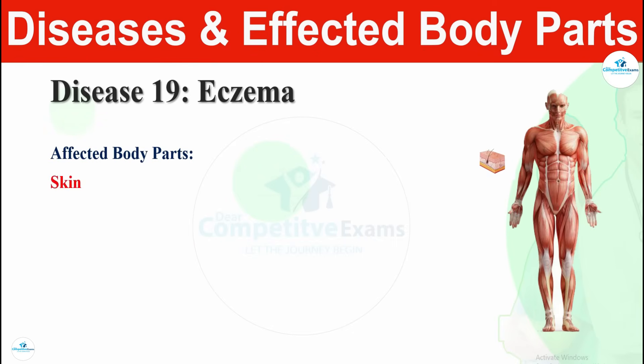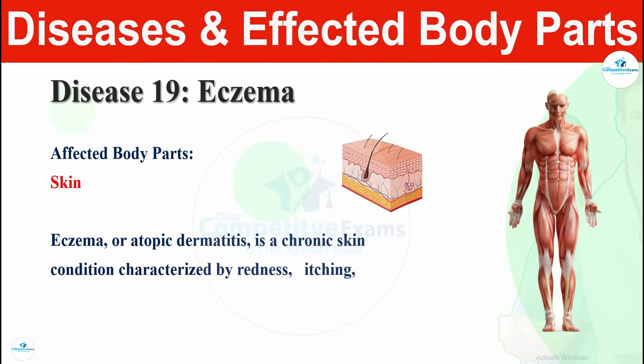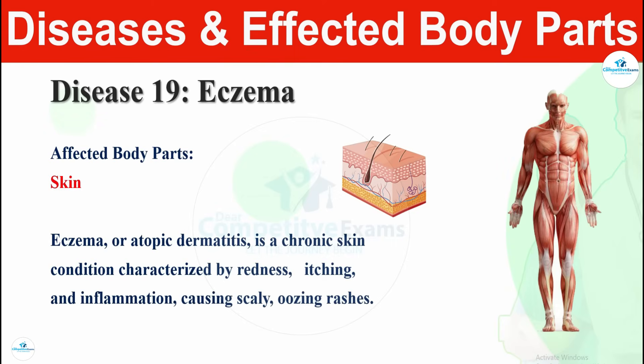Disease number nineteen is eczema. Eczema is a disease that affects the skin. Eczema, or atopic dermatitis, is a chronic skin condition characterized by redness, itching, and inflammation, causing scaly or oozing rashes on the body. Eczema affects the skin, causing redness, itching, inflammation, and oozing rashes.